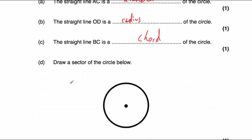Part D asks us to draw a sector on the circle. I like to think of a sector as a pizza slice. We draw one radius, then another radius — two radii. The sector is the region between those two radii and the arc. It could be the minor sector or the major sector, depending on which region you shade in. That is a sector of a circle.